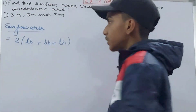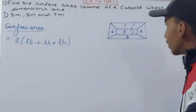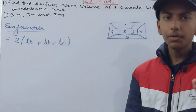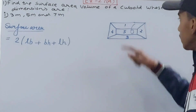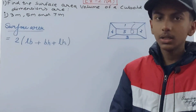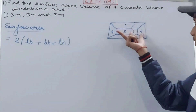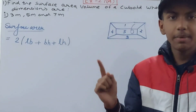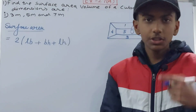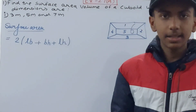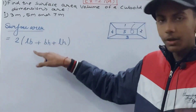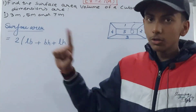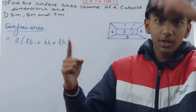Now let's understand why we use this formula. In a cuboid, the top and bottom faces are made up of length and breadth. The left and right side faces are made up of height and breadth. The front and back faces are made up of length and height. Since there are two of each type of face, that's why we multiply by 2.